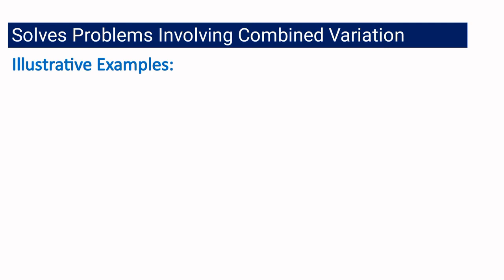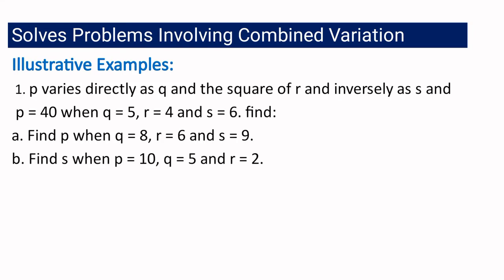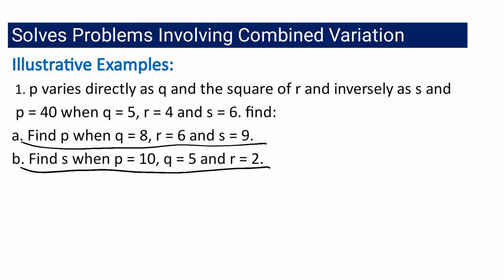Now let us solve problems involving combined variation. Problem 1: p varies directly as q and the square of r, and inversely as s. Given that p is 40 when q is 5, r is 4, and s is 6. Find: (a) p when q is 8, r is 6, and s is 9; and (b) s when p is 10, q is 5, and r is 2.